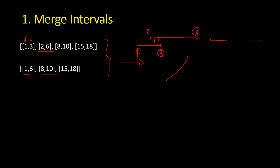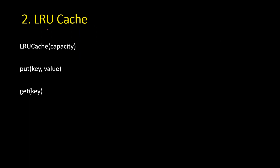The next problem is LRU Cache, which is very popular and appears in Amazon and Microsoft interviews as well. You implement a cache with a fixed capacity — when the cache is full, you purge the least recently used items. The constructor takes a capacity, and you also need a get function to fetch the value for a key, and a put function to add key-value pairs.